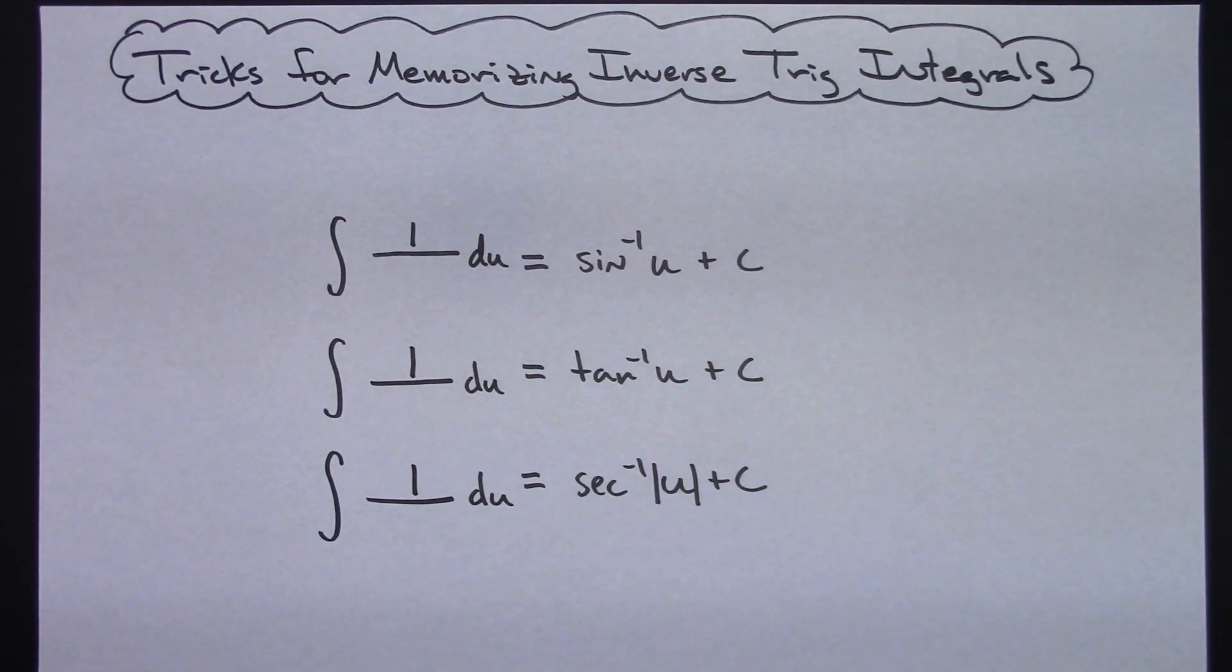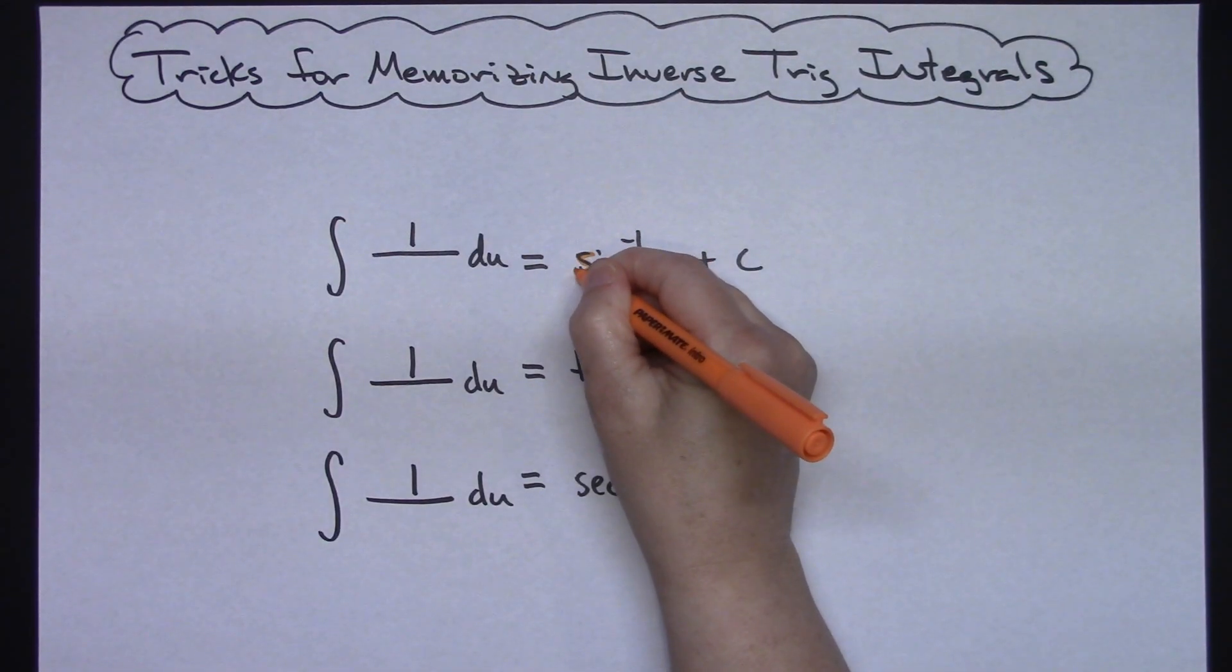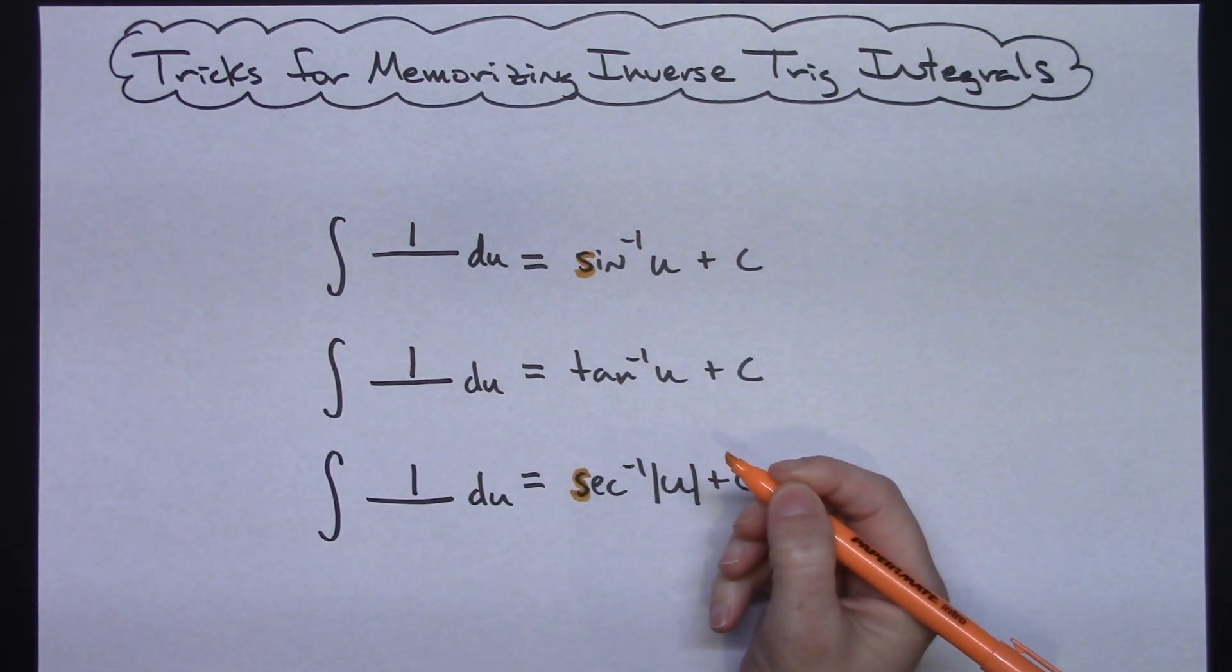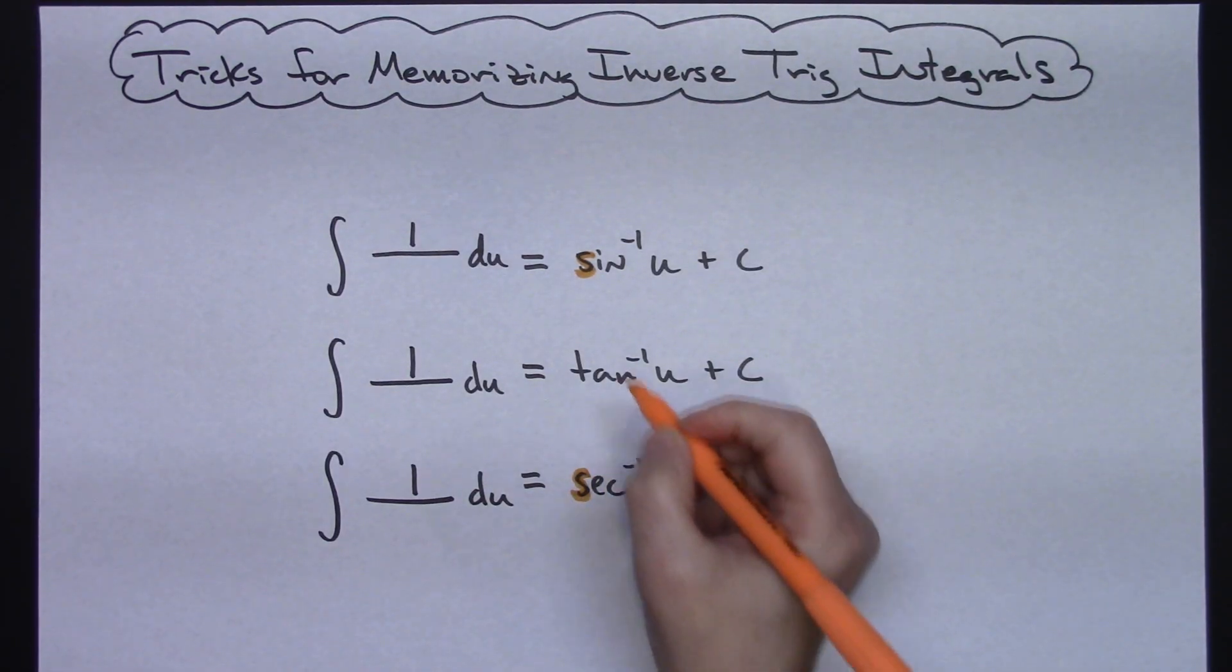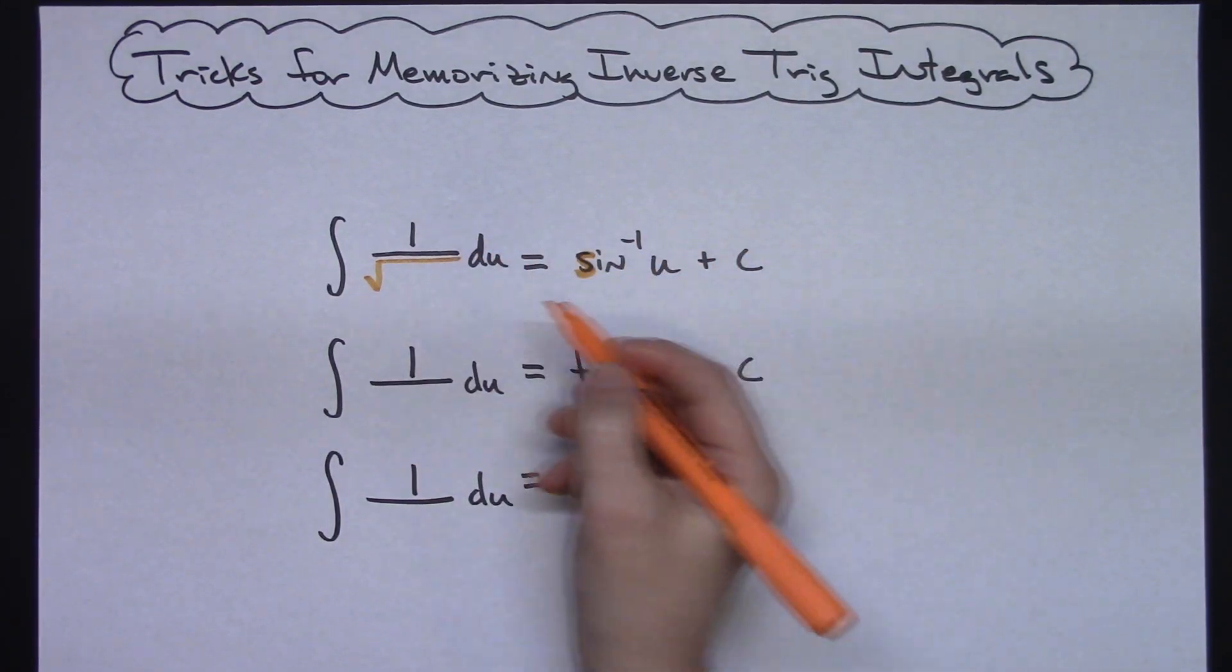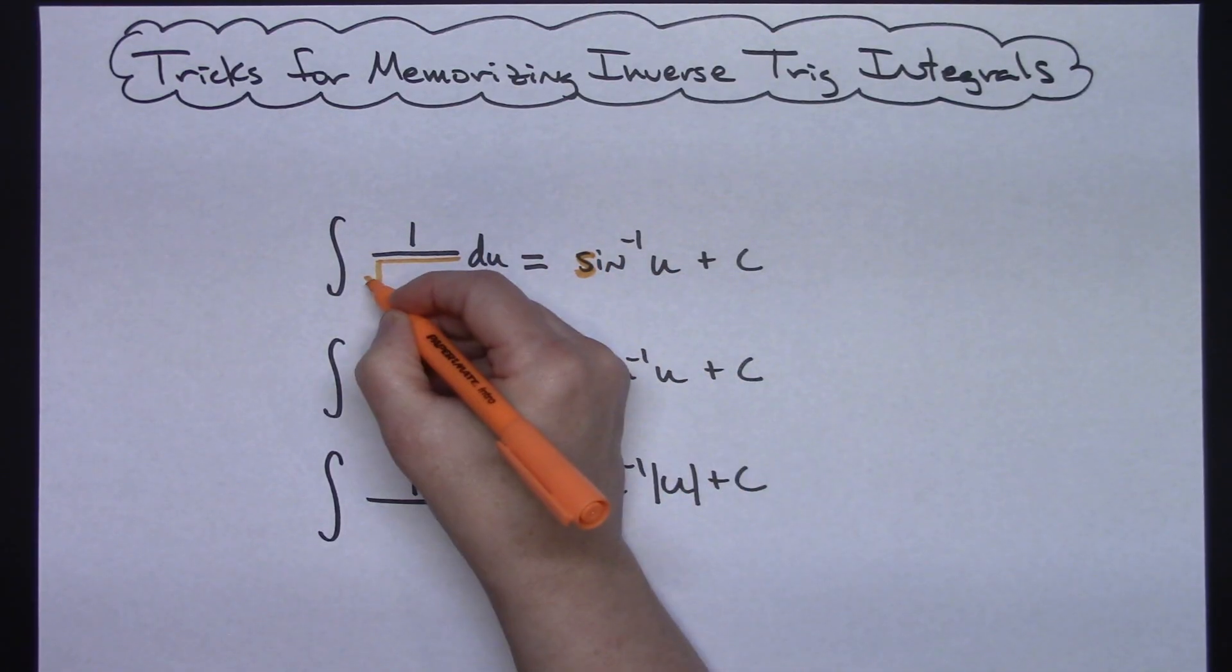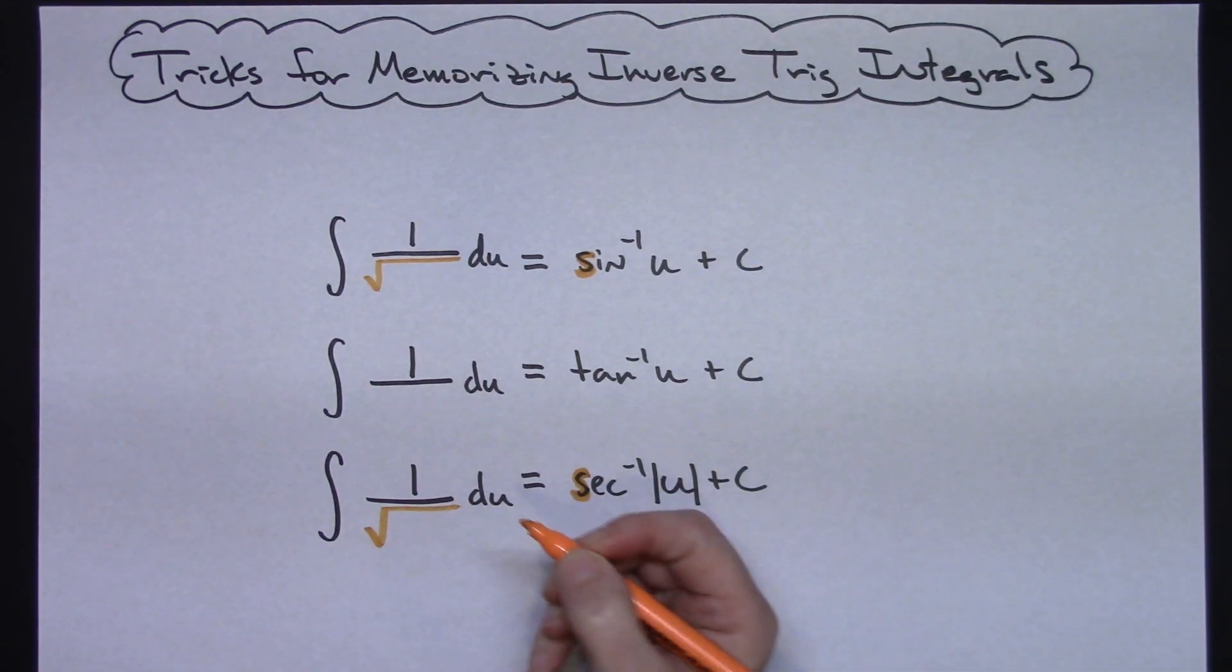Now the exact same way that I memorized the inverse trig derivatives - the S in the inverse sine and the S in the secant helped me to remember that there was a square root involved. So if I write a square root on the bottom, to me that kind of looks like the elongated S from the S right here. So both of those have one of those, so that means I have a square root in both of those.